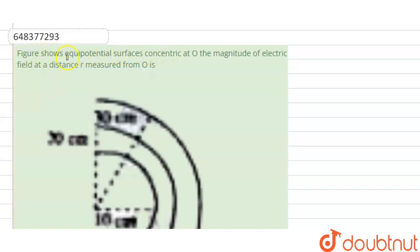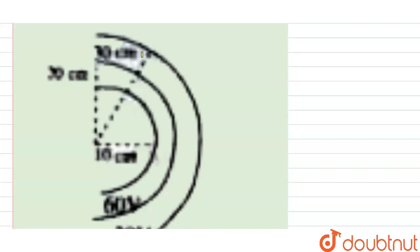Figure shows equipotential surface concentrated at O. The magnitude of electric field at a distance r measured from center O is how much? This is our center O. This is O.